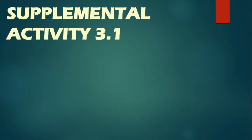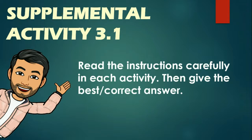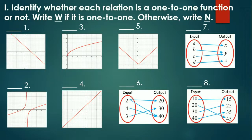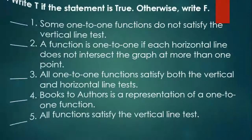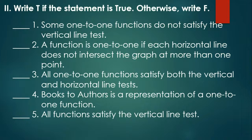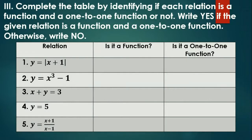For the activity, we have Supplemental Activity 3.1. Read the instructions carefully and give the best or correct answer — I'll be sending an image of these activities in our group chat. Part 1: identify whether each relation is a one-to-one function or not — write W if it is one-to-one, otherwise write N. Part 2: write T if the statement is true, otherwise write F. Part 3: complete the table identifying if each relation is a function and a one-to-one function — write yes or no accordingly. Submission of all outputs will be on Friday.